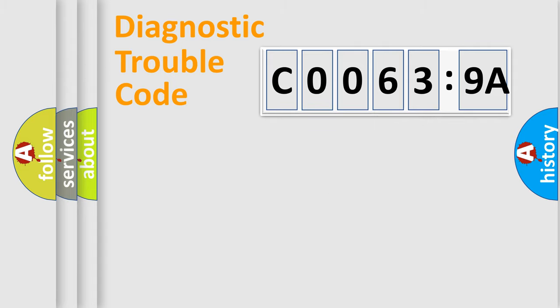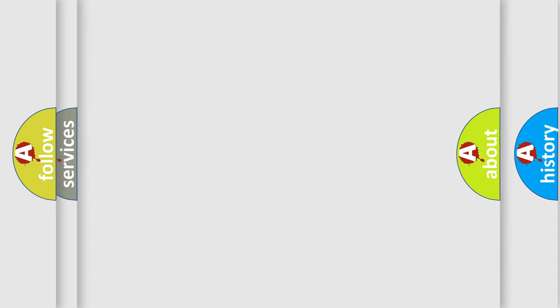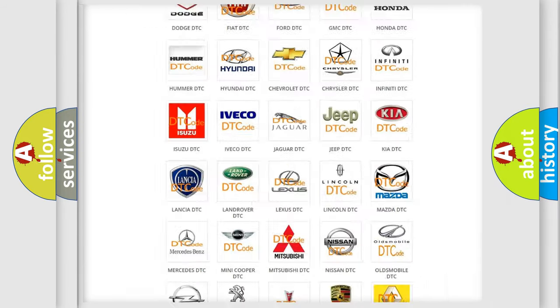Our website airbagreset.sk produces useful videos for you. You do not have to go through the OBD2 protocol anymore to know how to troubleshoot any car breakdown. You will find all the diagnostic codes that can be diagnosed in Chrysler vehicles, and many other useful things.